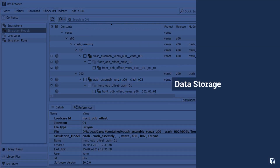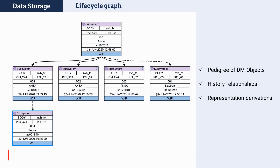Moving on, let's have a look at what's new in the data storage, the backend of the modular environment that offers storage solutions tailored to CAE needs. An outstanding new development is in the DM browser, which now offers a graphical representation of the life cycle of a DM object in the form of a pedigree tree.